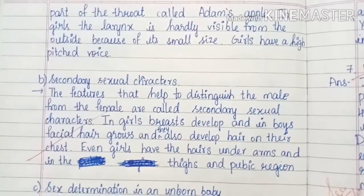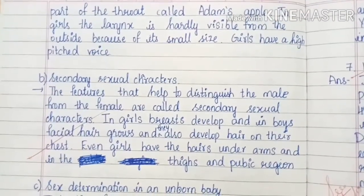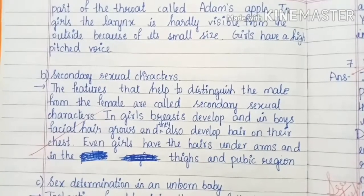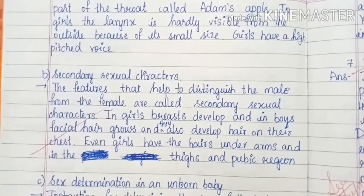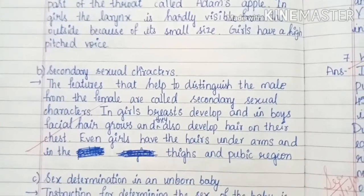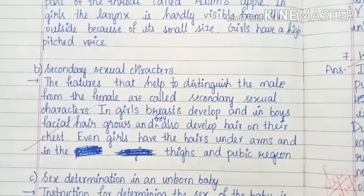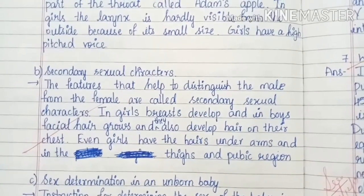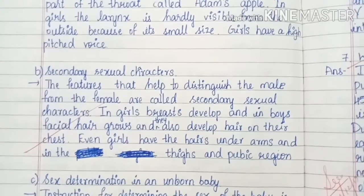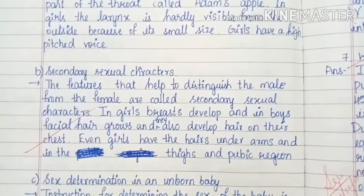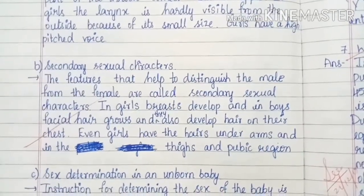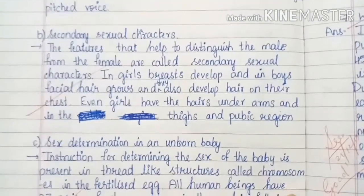Secondary sexual characters: The features that help distinguish the male from the female are called secondary sexual characters. In girls, breasts develop, and in boys, facial hair grows and they also develop hair on their chest. Girls also have hair under the arms and in the thighs and pubic region.